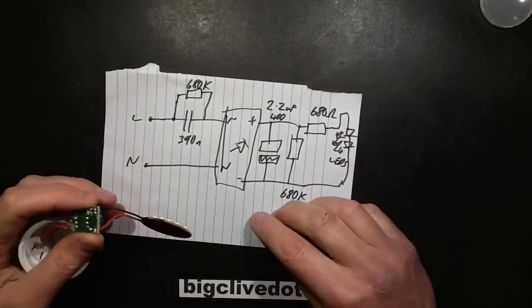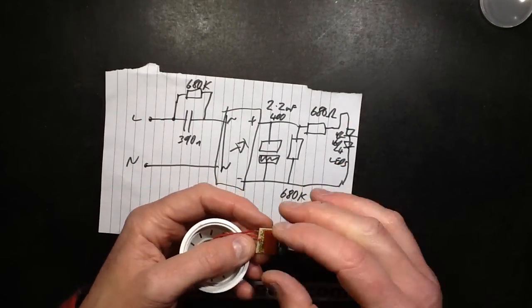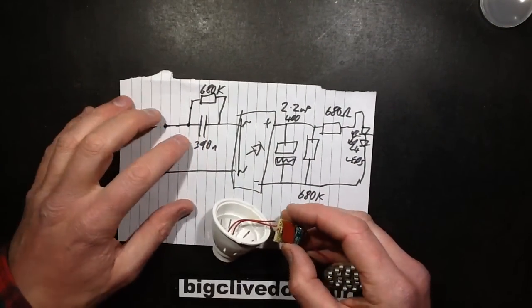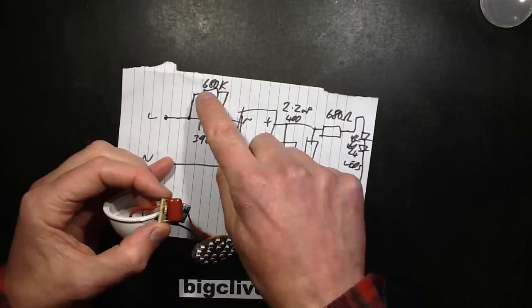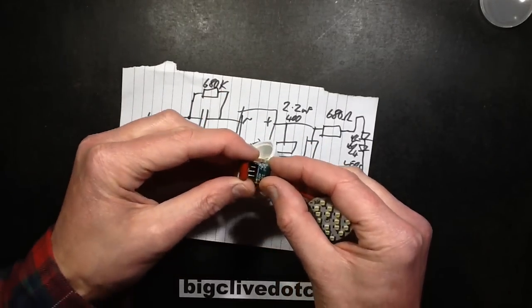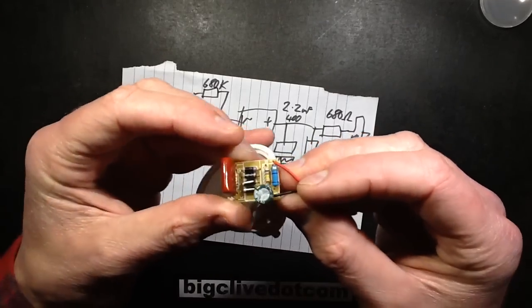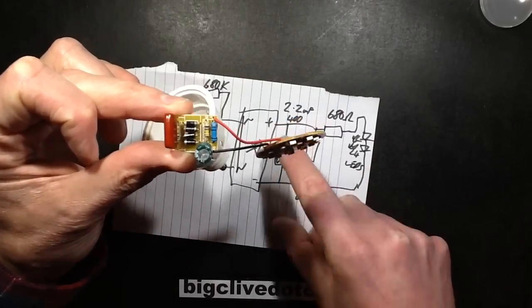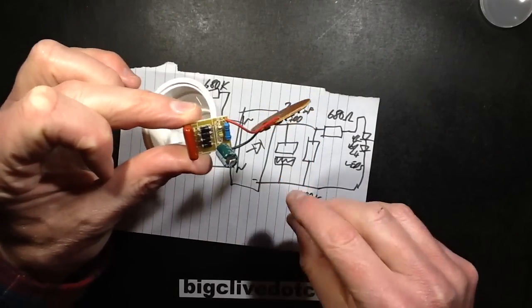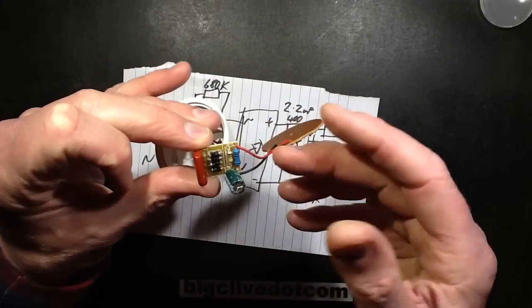The circuit, which I drew out earlier, is very simple. It's got the 390 nanofarad capacitor here with a 680k discharge resistor, the discrete bridge rectifier. Then the 2.2 microfarad, which is an unusually low value for that capacitor, but good enough. It's a 400 volt capacitor with another 680k discharge resistor across it.